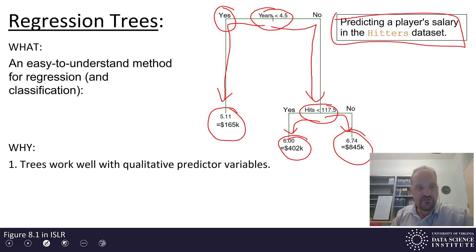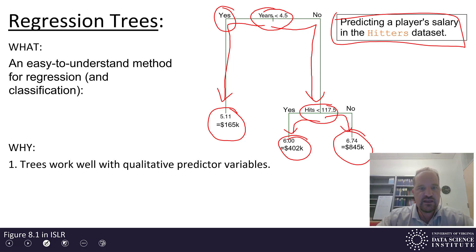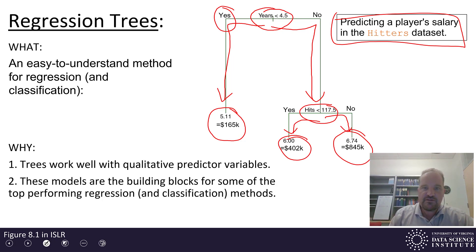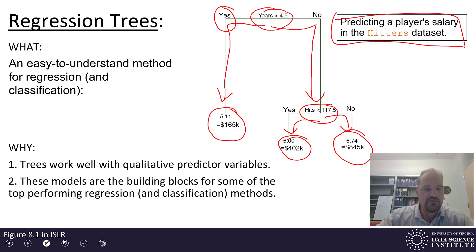Why would we do prediction this way? Trees work well with qualitative predictors — you can send one category down one side and another down the other, whereas linear regression doesn't work easily with qualitative predictor variables. Also, and this is really the main reason we care about them, regression trees are the building blocks for some of the top performing regression and classification models, used enormously as building blocks for more complicated models.